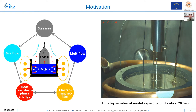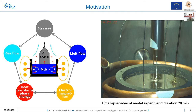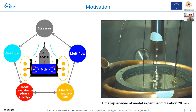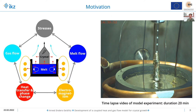So let's start with the motivation. I am working on Czochralski crystal growth, which is an important process especially for the production of silicon single crystals that are used to produce solar cells and computer chips. Here you see a video from the experiment that we built for validation. It works with tin, and the process itself works by dipping a seed crystal into liquid raw material, which you see here in this crucible.